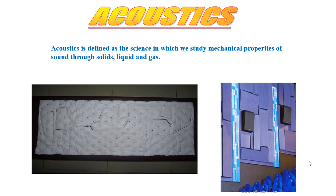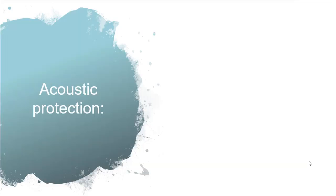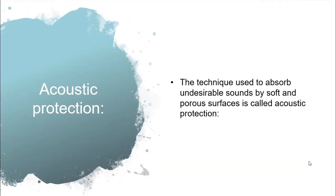What is acoustic protection? The technique used to absorb undesirable sounds by soft and porous surfaces is called acoustic protection. This technique absorbs undesirable sounds using soft and porous surfaces. A surface that contains small pores is called a porous surface. So we use soft and porous surfaces to absorb undesirable sounds — this technique is called acoustic protection.